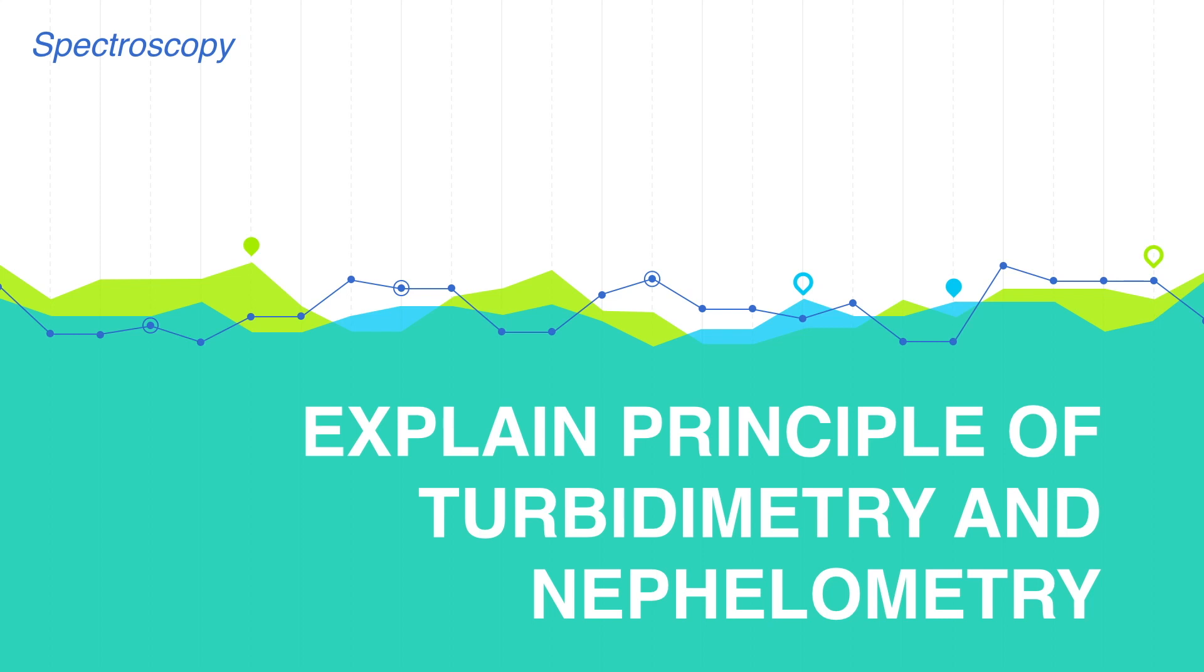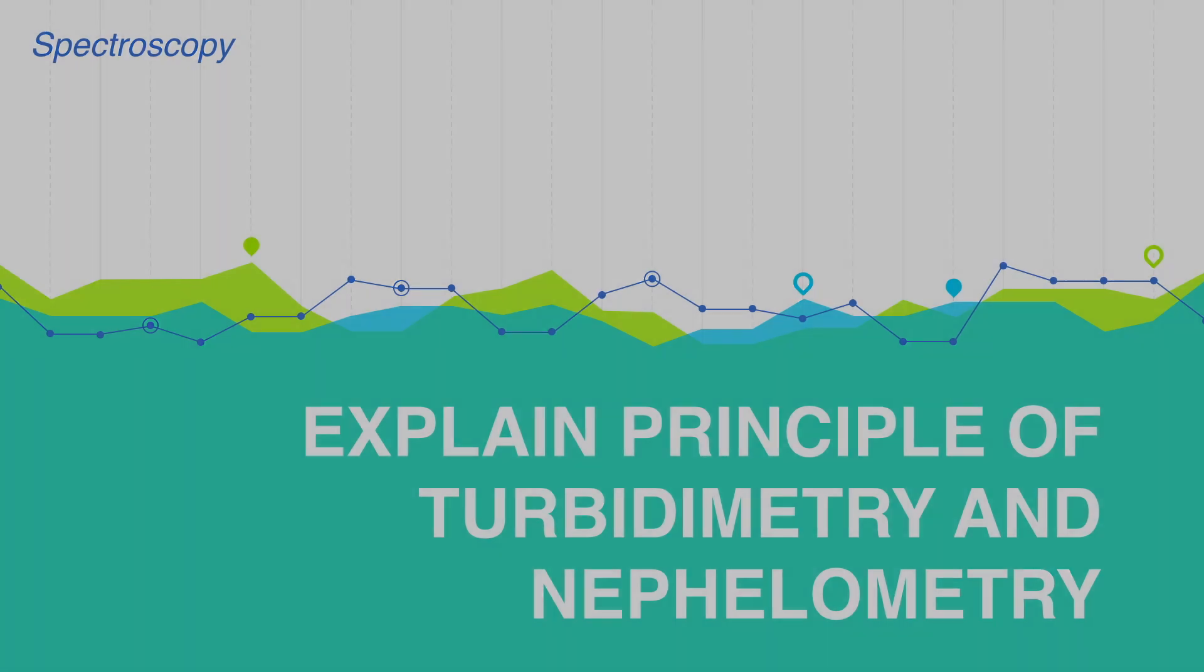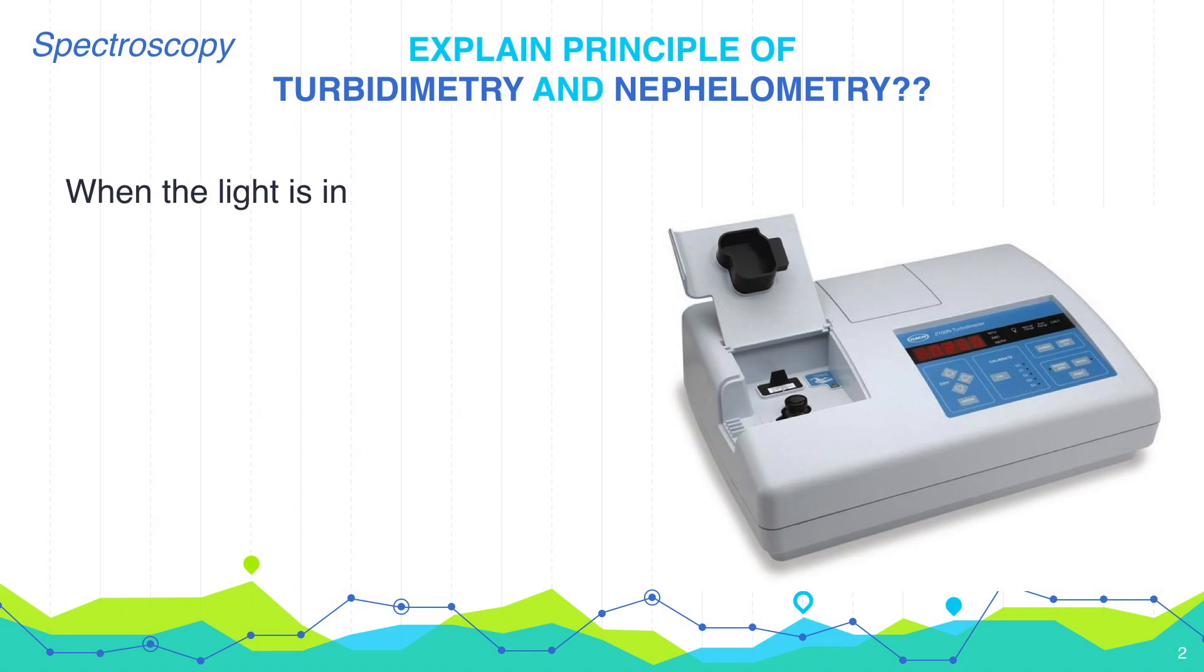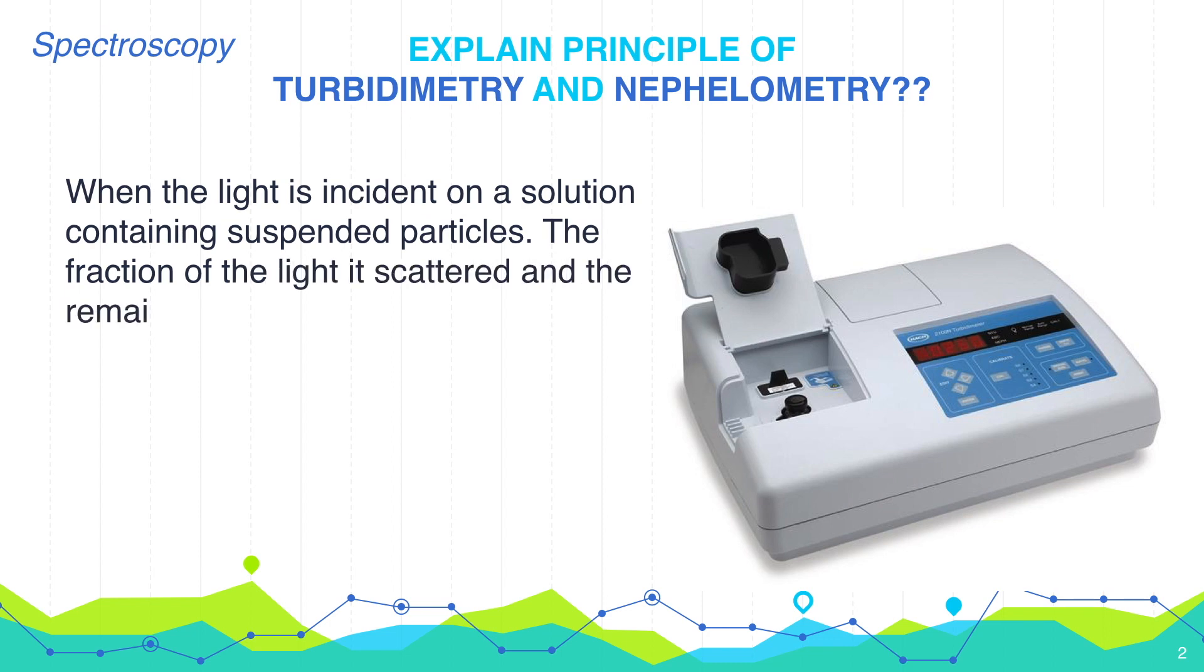Explain Principles of Turbidimetry and Nephelometry. When the light is incident on a solution containing suspended particles, the fraction of light is scattered and the remaining is transmitted.